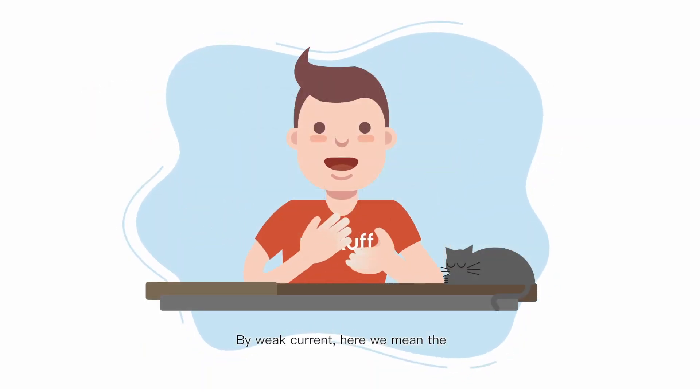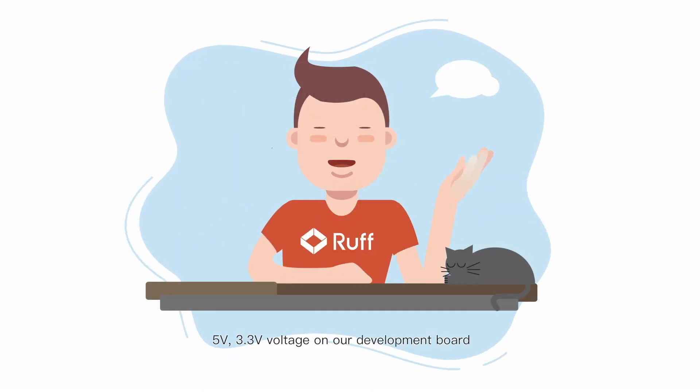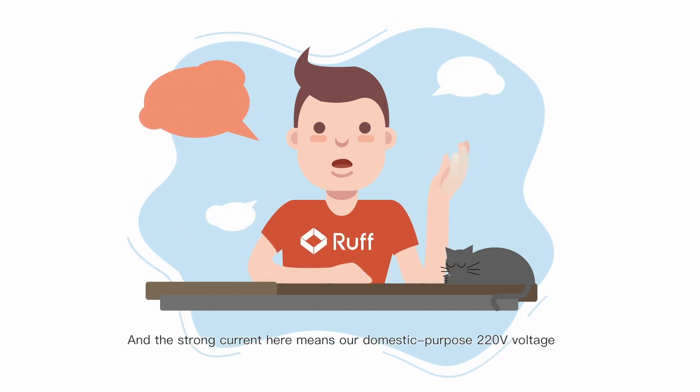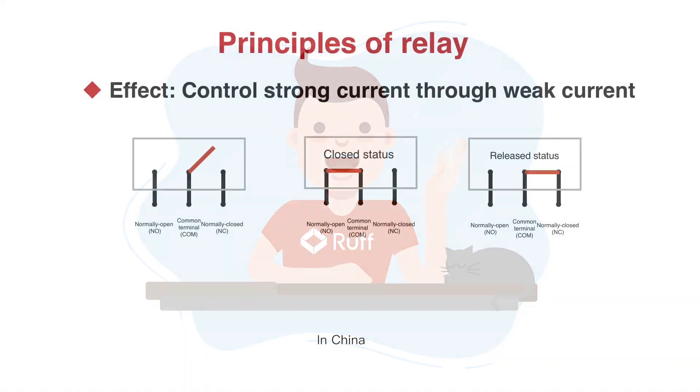By weak current, here we mean the 5 voltage or 3.3 voltage on our development board. And the strong current here means our domestic purpose 220 voltage in China.